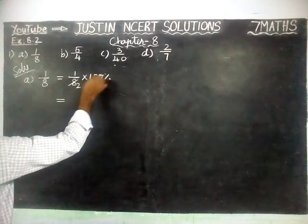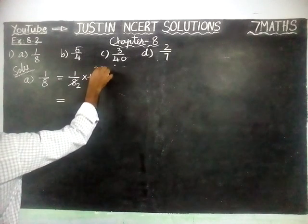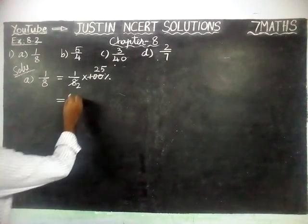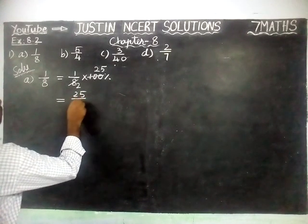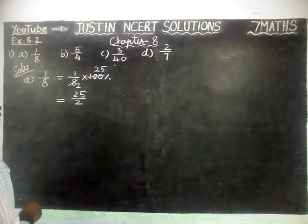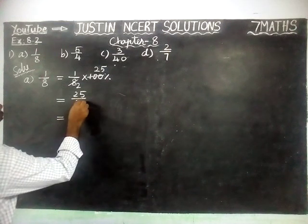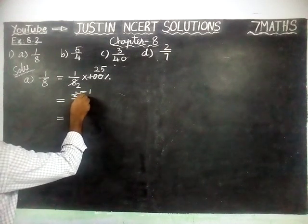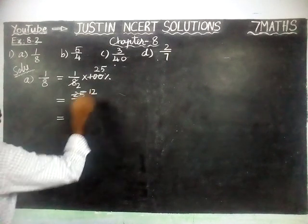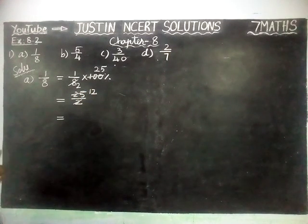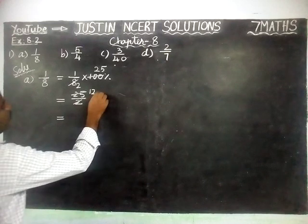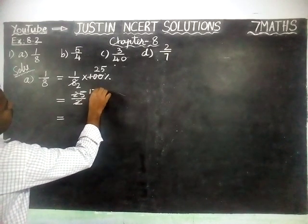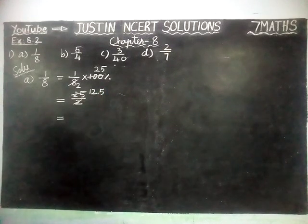2 fours are 8, and 25 fours are 100. Now again we are going to divide this. 25 divided by 2: 1 two is 2, in 2 we have 1. Next, 5 is there. 2 twos are 4, remaining 1. We cannot divide it further, so we are going to make a decimal point. Now this is 10; 5 twos are there.